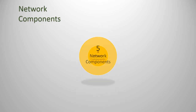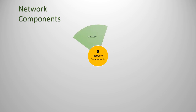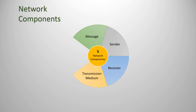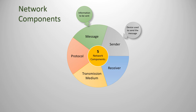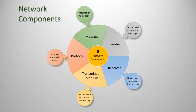There are five basic networking components. The first is the message — which has the information to be sent. The second is the sender — the device used to send the message. Third is the receiver — the device used to receive the message. Fourth is the transmission medium — how the message is sent. And fifth is the protocol — the format used to send the message.